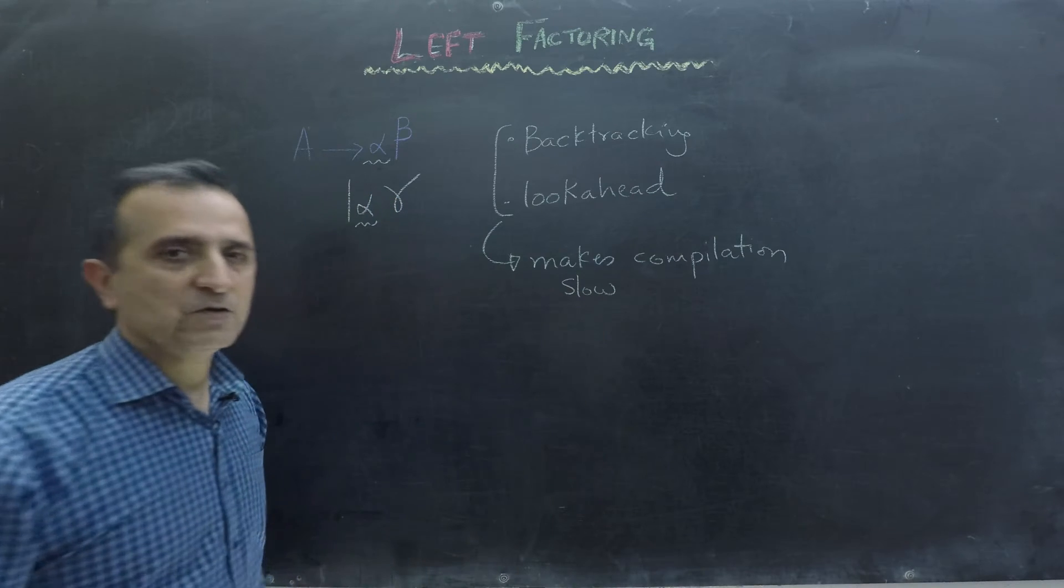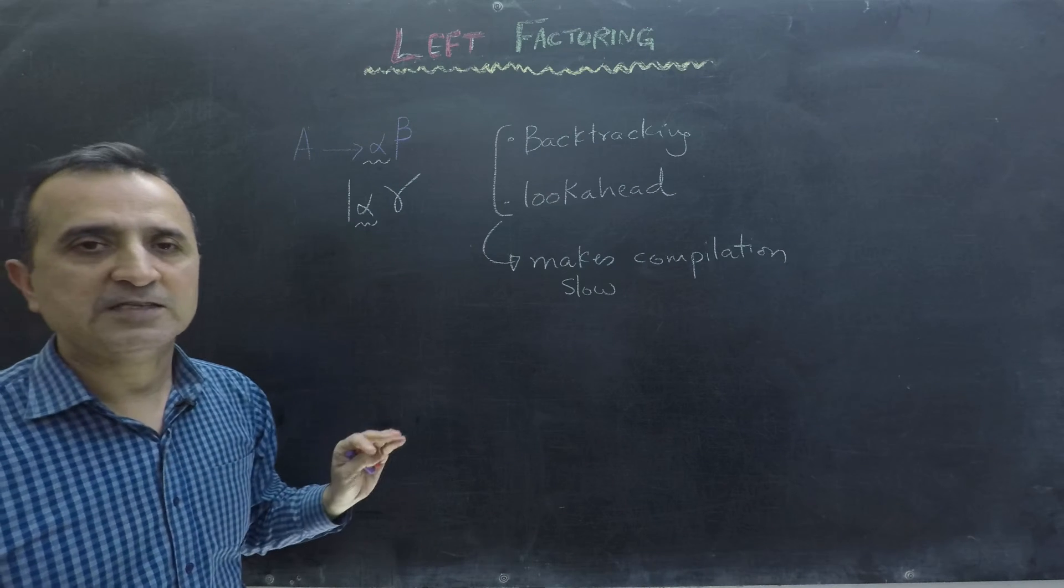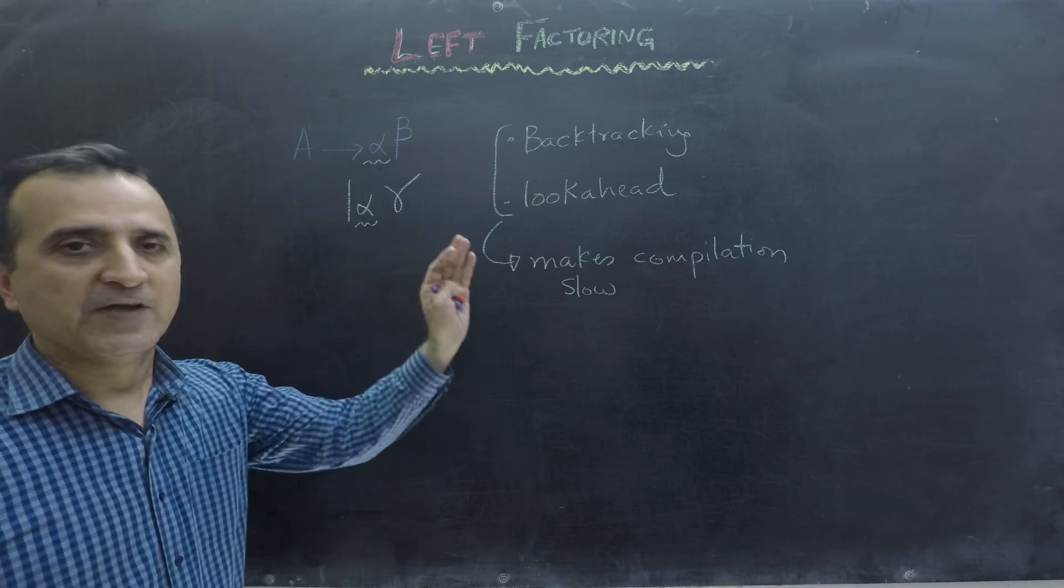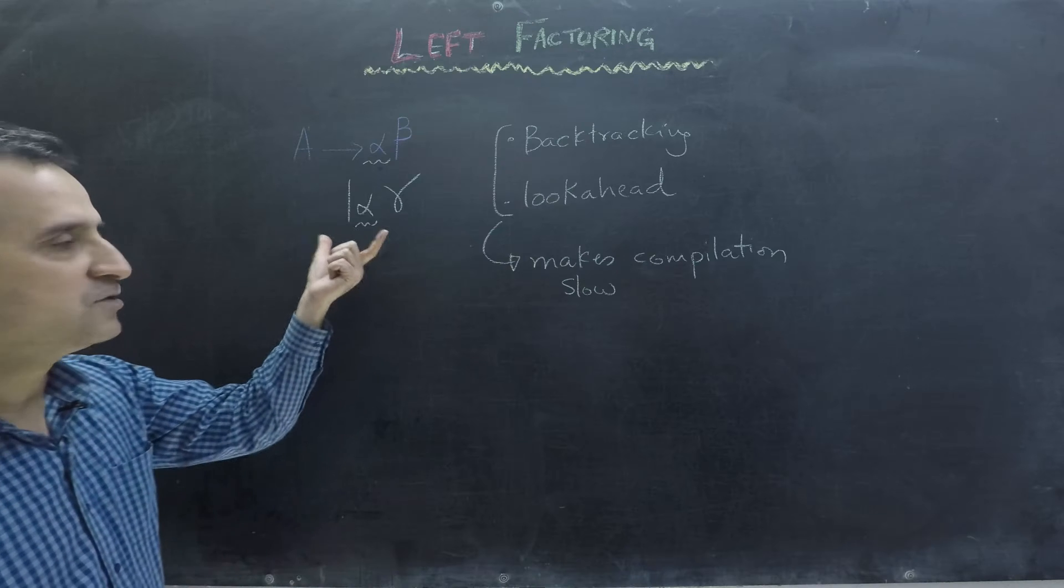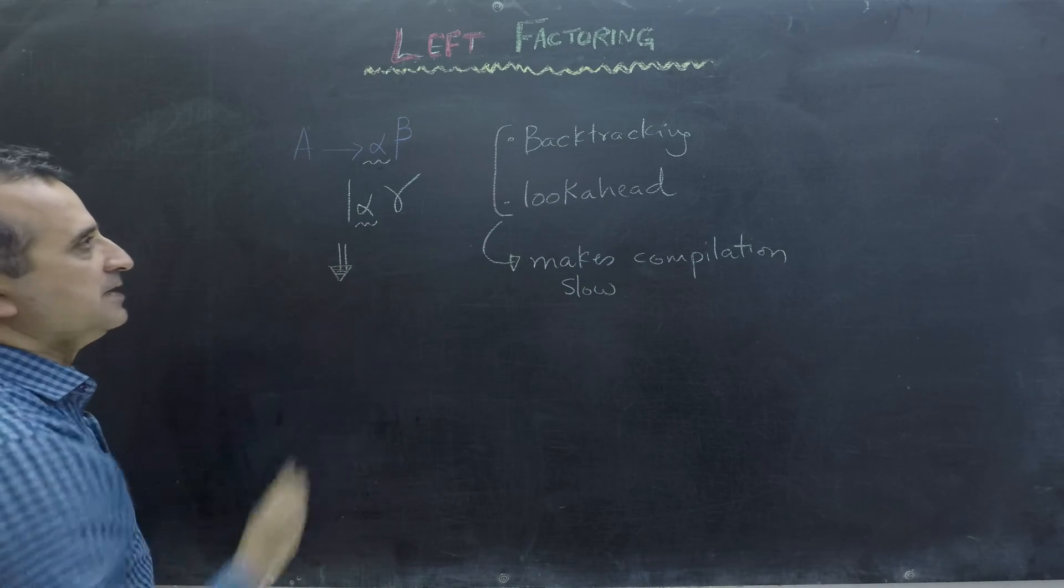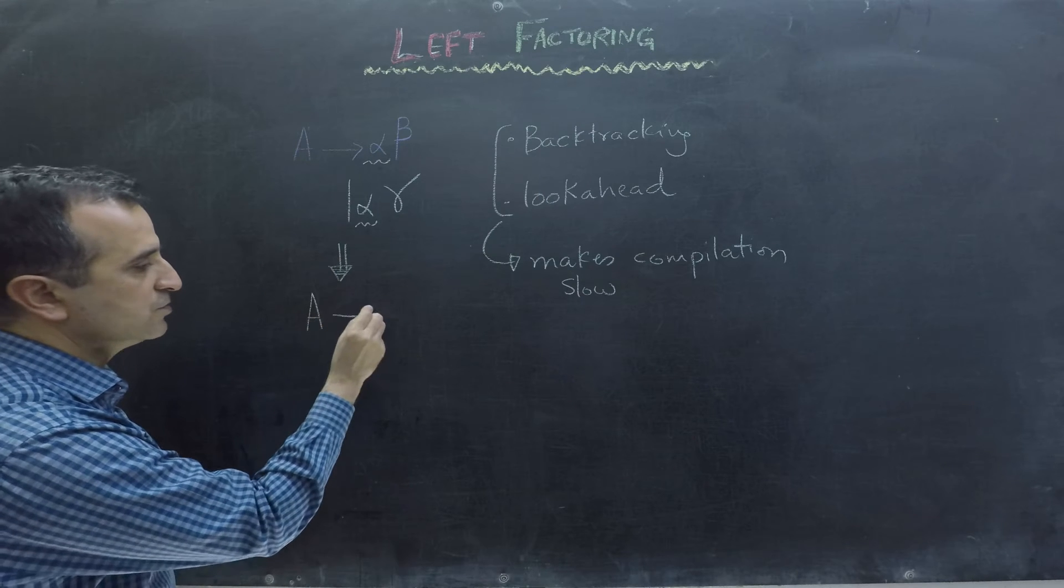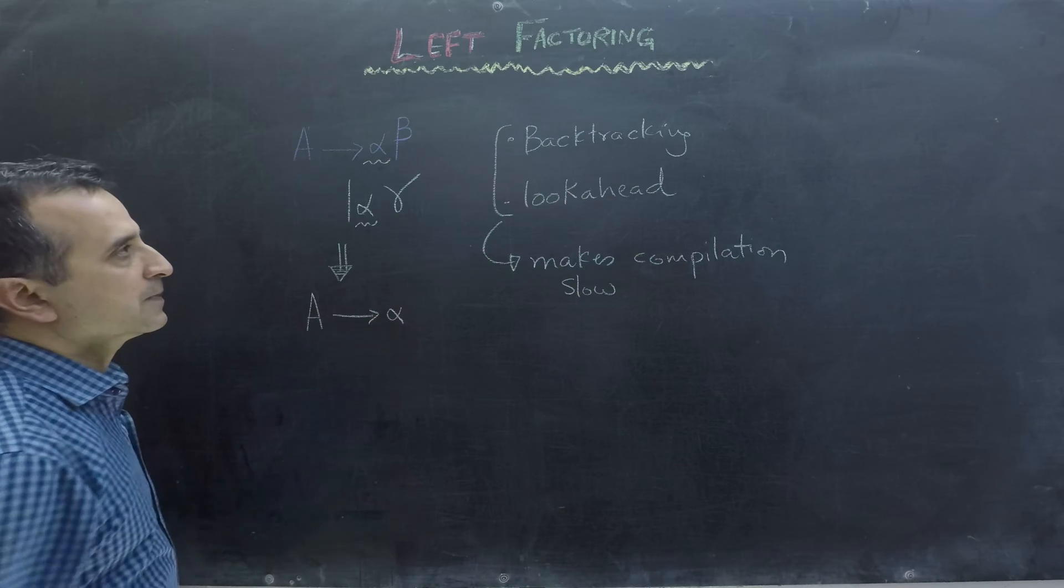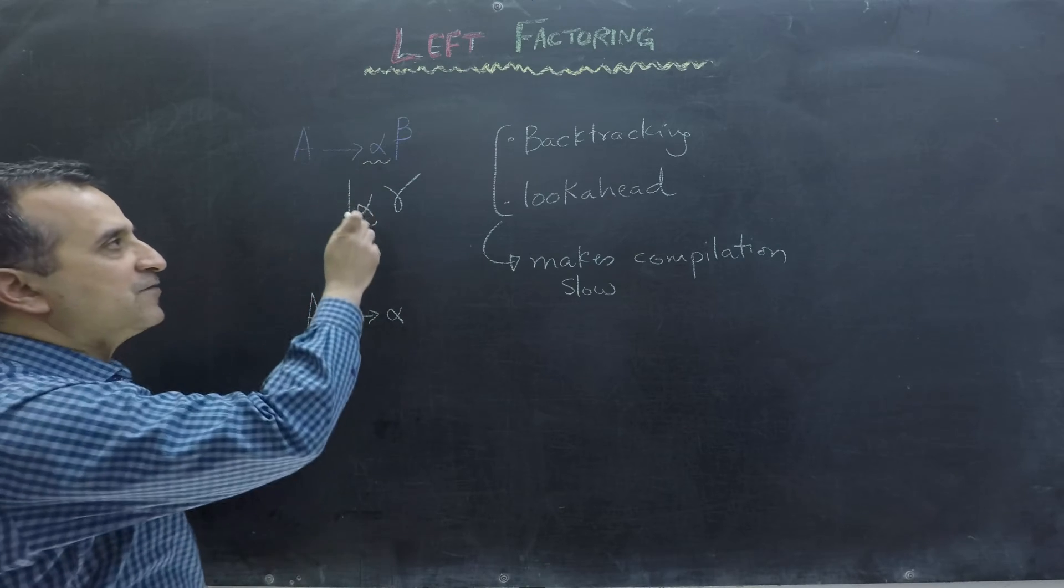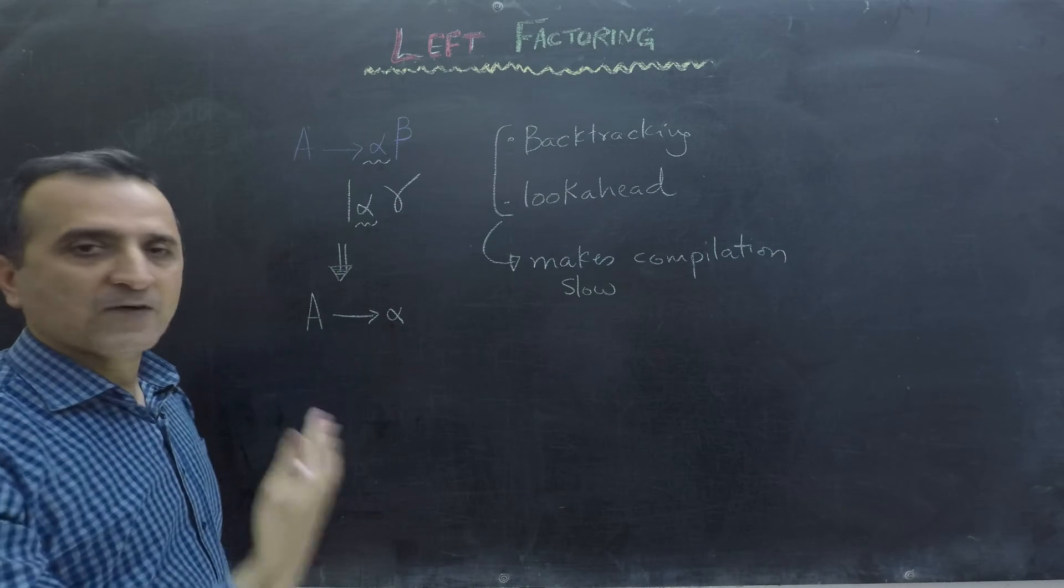A better solution is to eliminate these common prefixes using left factoring. So to eliminate these common prefixes, we can rewrite these productions as A goes to alpha. So we have written the common prefix once instead of twice, and then we have written new non-terminal A prime.